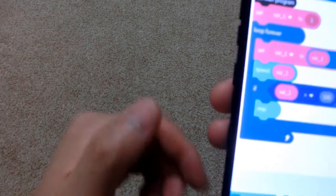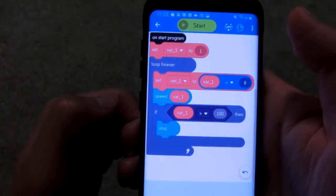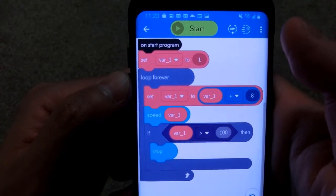All right, so what's the problem? If variable is larger than 100, then stop. However, it seems like it keeps going and it's not trying to stop at all.